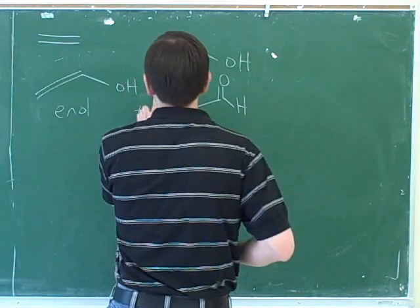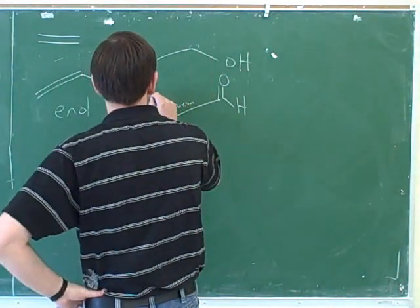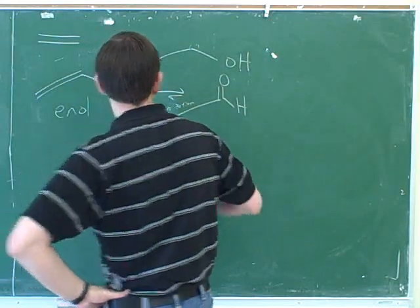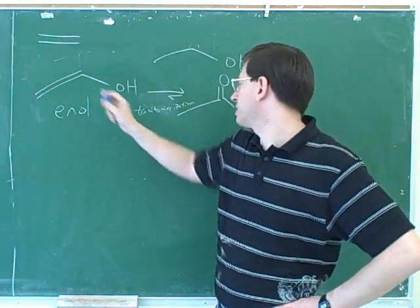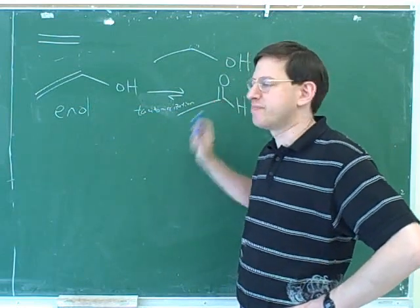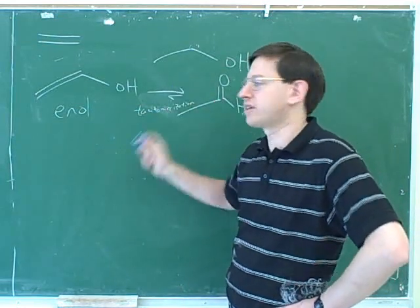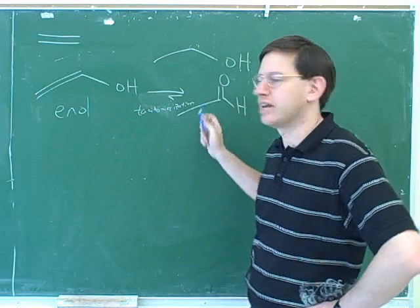Really what's happening is that there's an equilibrium here, but the equilibrium lies far to the right. There would be an equilibrium between the enol and the aldehyde, but it lies far to the right, so we should basically think of the enol as turning into this aldehyde.